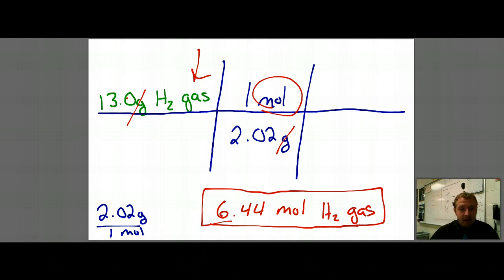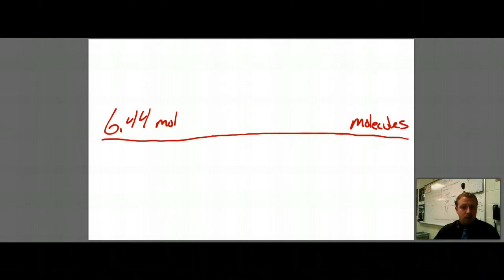Now, we could take this one step further, and we could say, now that I have moles of something, how many particles is that? How many molecules, notice I'm using a different particle here, not atoms, how many molecules of H2 is that? Well, I could say that I have 6.44 moles, and I want to convert that to molecules. Well, I know that one mole is equal to 6.02 times 10 to the 23rd molecules.